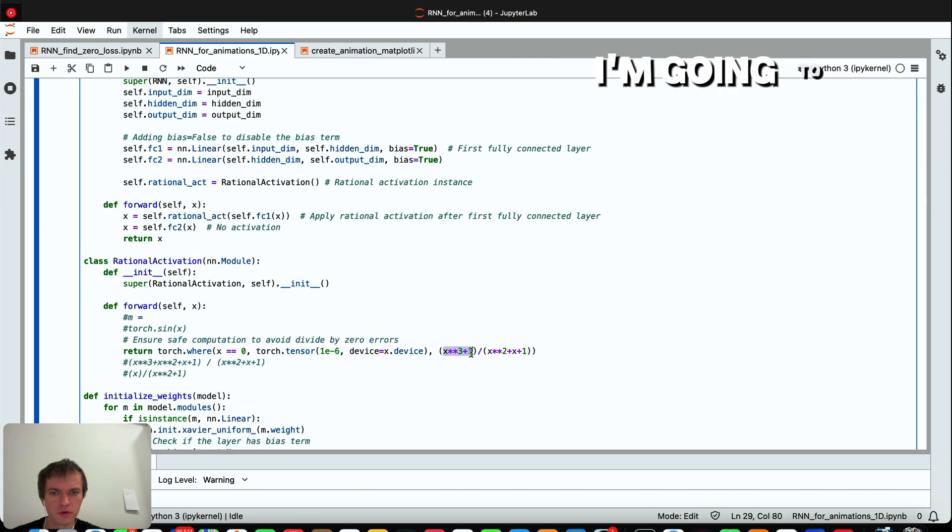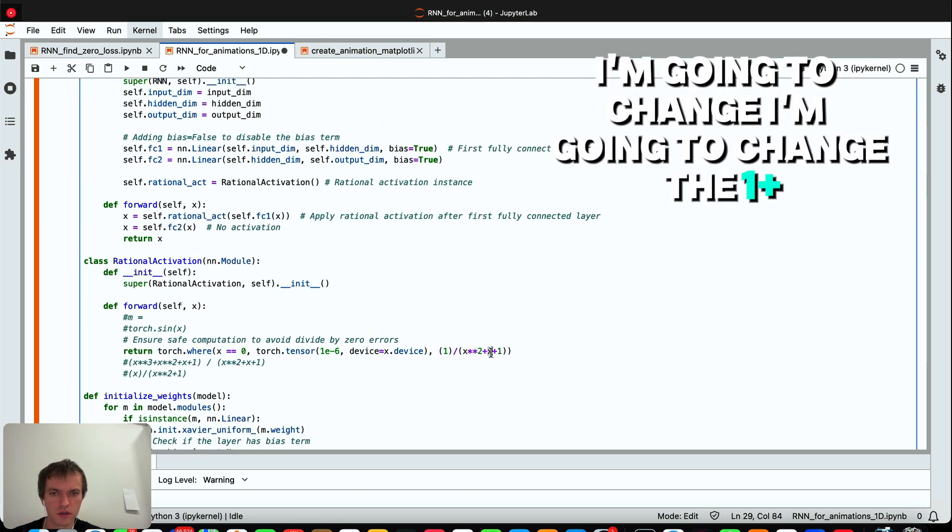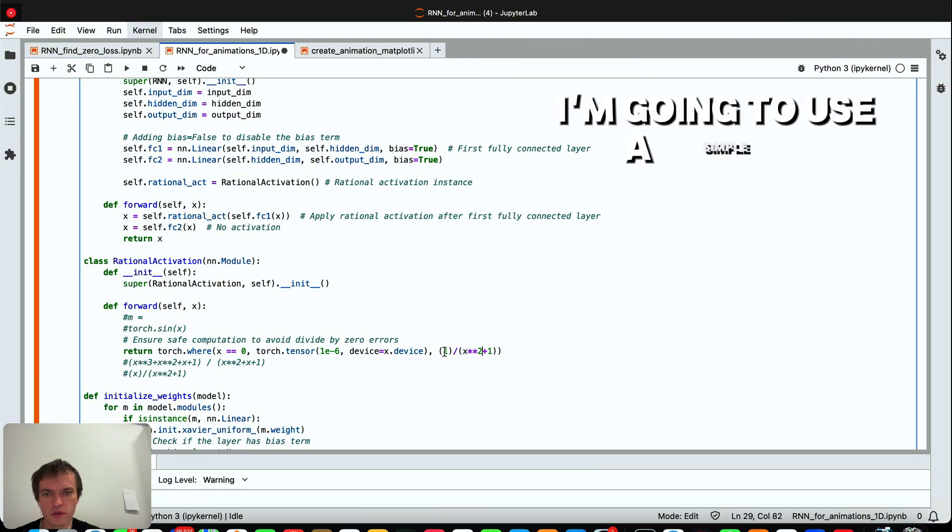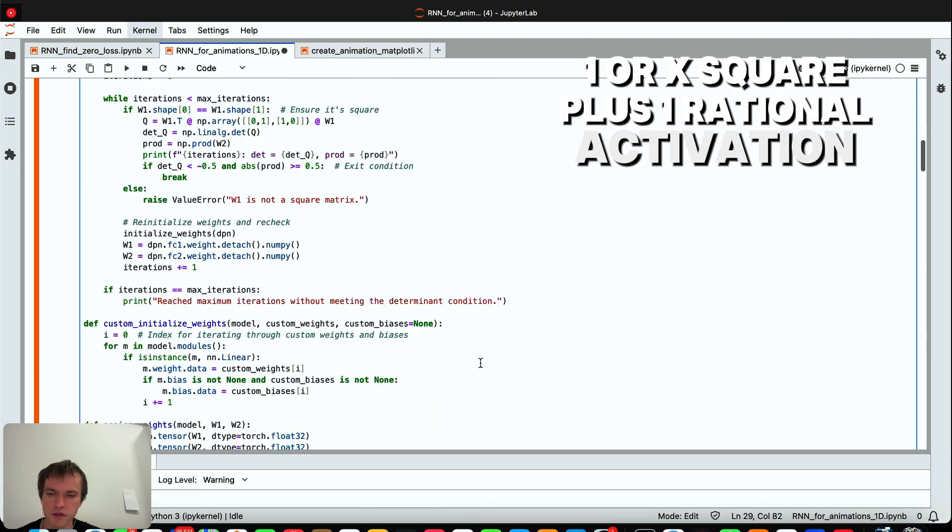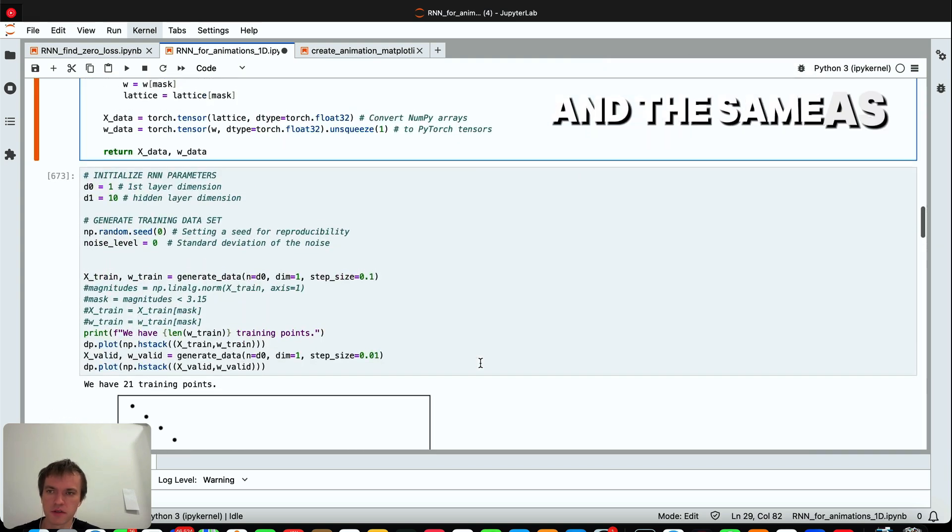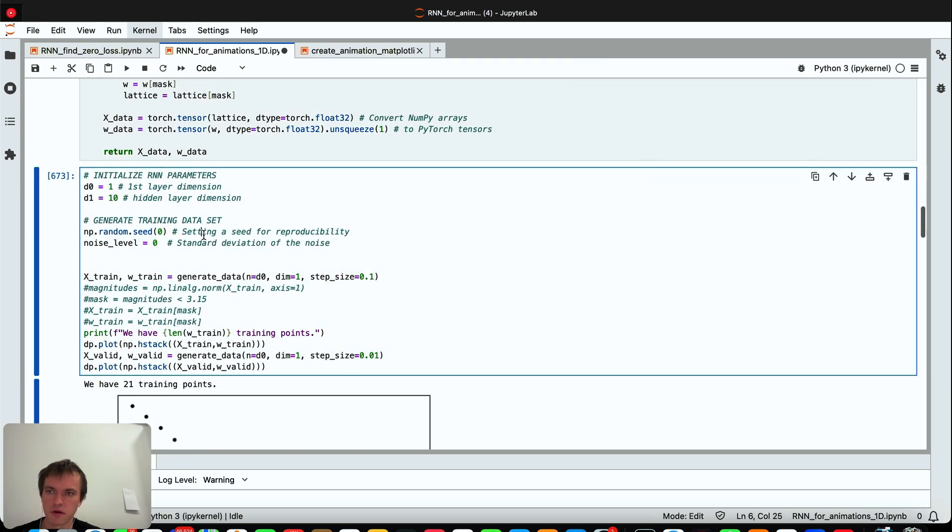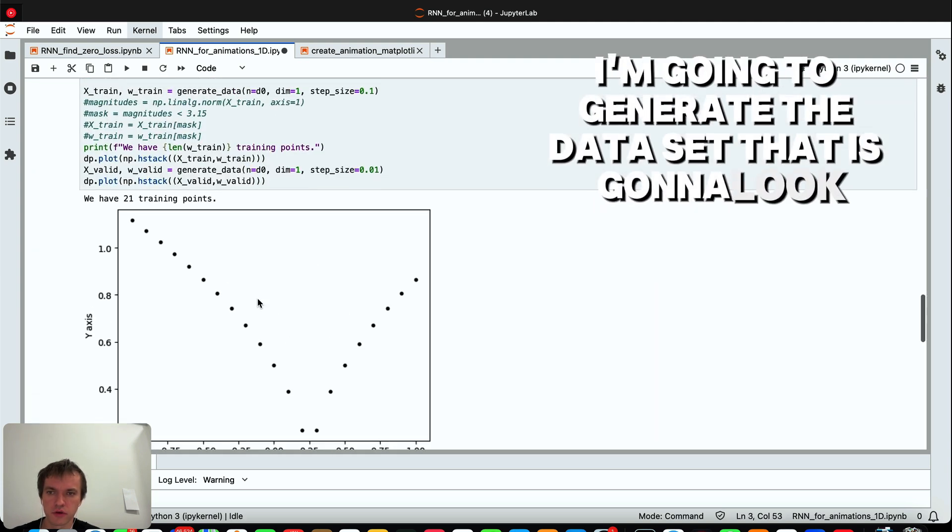Actually I'm going to change to a simple one: 1 over x squared plus 1 rational activation function. The same as they did in their paper, I will have 10 layers for the hidden layer. I'm going to generate the dataset that is going to look like this.